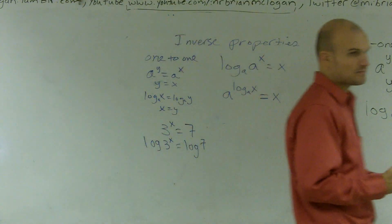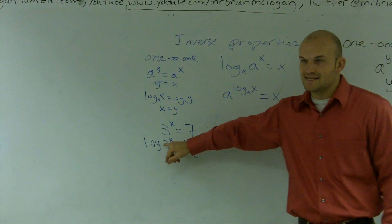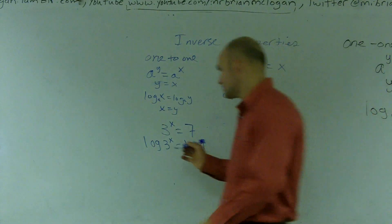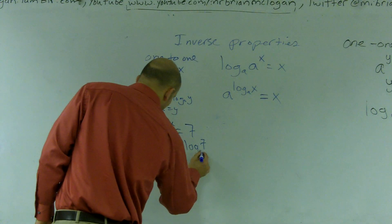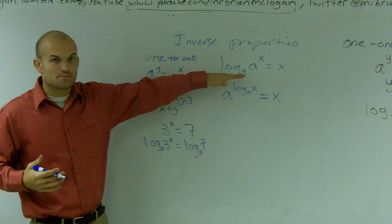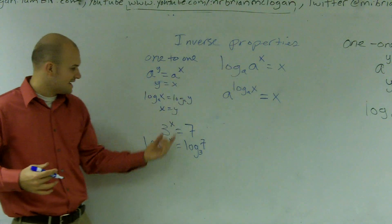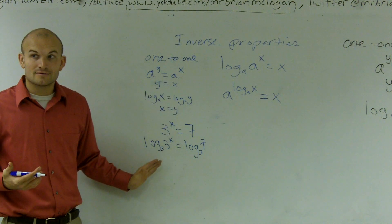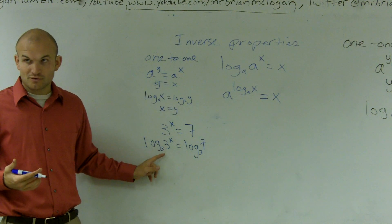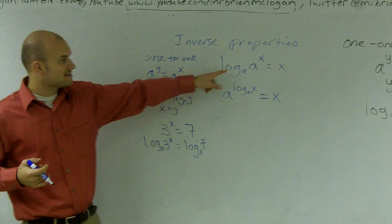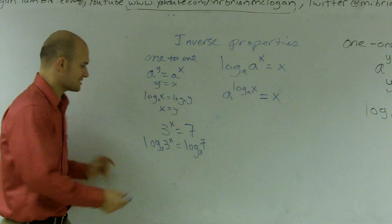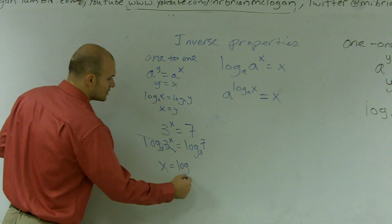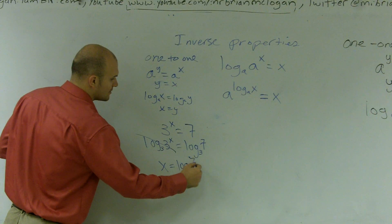Now here's where the inverse property is going to come in. Rather than picking base 10 as my log, if I pick my base to be 3, right, this little base 3, I can now use my inverse property to say, hey, log base 3 of 3, that's going to now give me 1, right? Because 3 raised to what number gives you 3? One. So now what it does is it cancels out and just leaves me with x. So this whole thing cancels out and I'm just left with x equals log base 3 of 7.